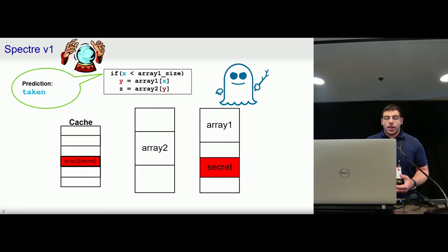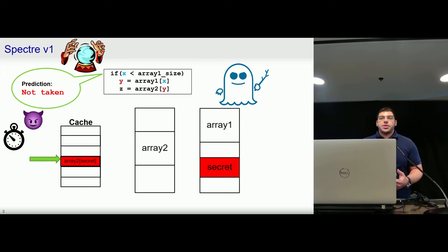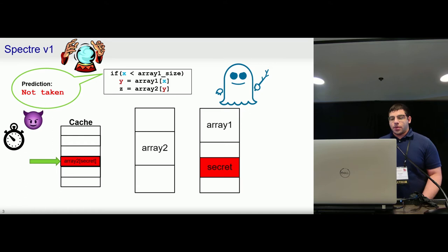From here, we can use a side channel where we access different lines in the cache, timing our accesses, and the timing differences will reveal which addresses were recently accessed. And since our most recent access was dependent on secret data, this can be used to retrieve the secret, showing how branch prediction allows us to arbitrarily read memory in the victim's address space.